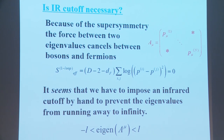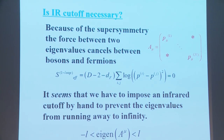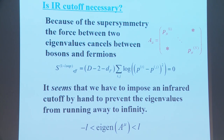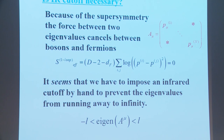The next question is whether an infrared cutoff is necessary. Because of supersymmetry, the force between two eigenvalues cancels between bosons and fermions. In 10 dimensions with 10-dimensional super Yang-Mills reduced to zero, we have 8−8=0. It seems we have to impose an infrared cutoff by hand to prevent the eigenvalues from running away to infinity.